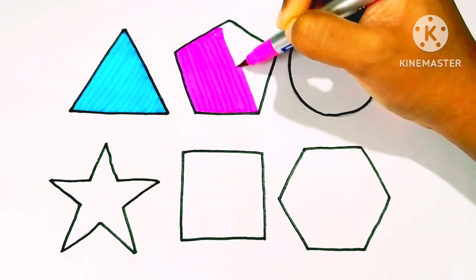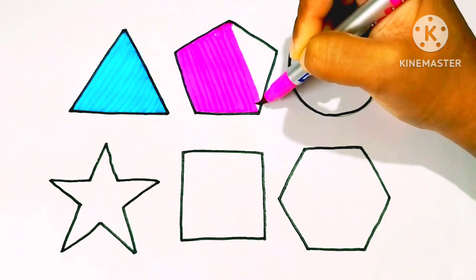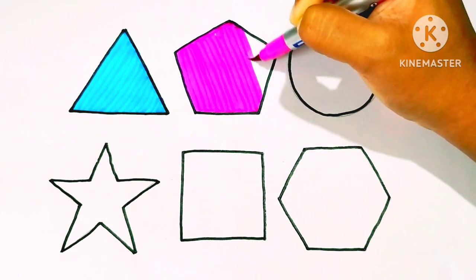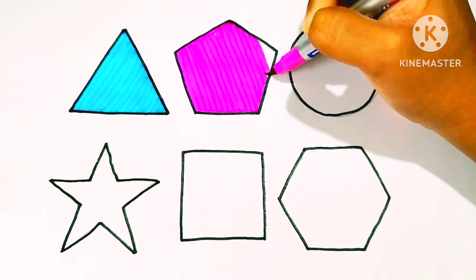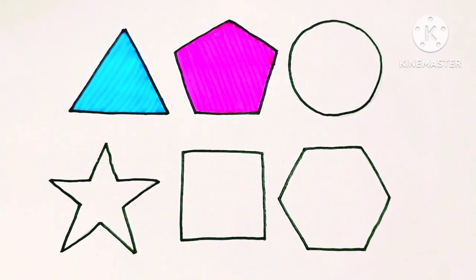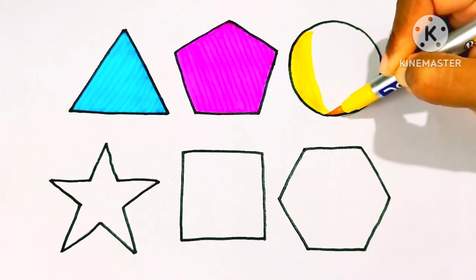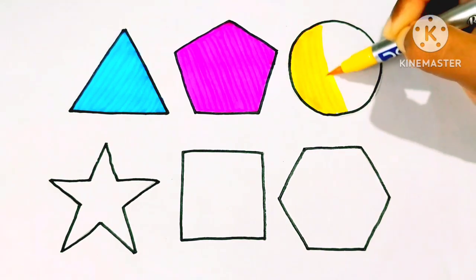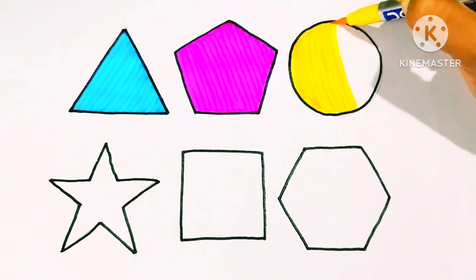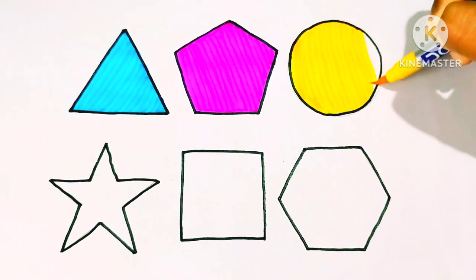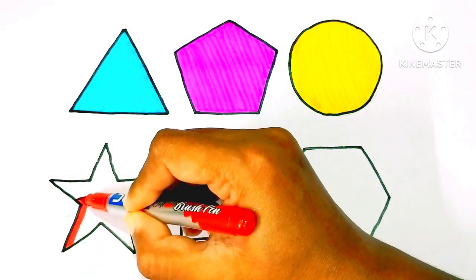Pink color pentagon. Pink color pentagon. H, I, J, K, L, M, N, O, P, Q, R, S, T, U, V, W, X, Y, and Z. Now I know my ABCs. Yellow color circle, yellow color circle.